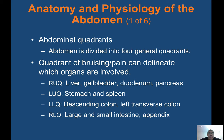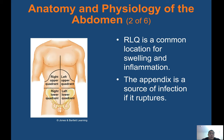The abdomen is divided into four general quadrants. The landmark you're looking for to divide the four quadrants is going to be your belly button — that's going to be the division. Bruising and pain can delineate which organs are involved. The RUQ contains the liver, gallbladder, duodenum, and pancreas. The LUQ contains the stomach and spleen. The LLQ contains the descending colon and left transverse colon. The RLQ contains the large and small intestine and the appendix. The RLQ is a common location for swelling and inflammation — the appendix is a source of infection if it ruptures, so have a high index of suspicion for anyone complaining of lower right quadrant pain and possibly a fever.